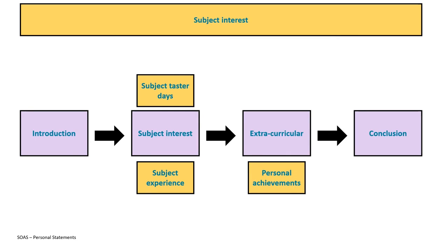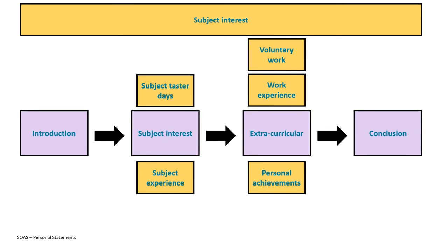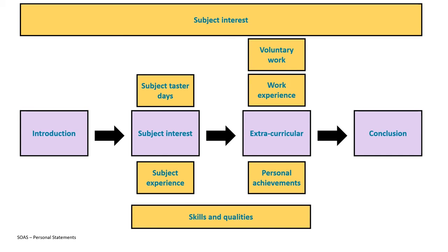Thinking about the extracurricular section, there are a number of things you could include. One might be personal achievements — but consider achievements that are relevant to academia and the overall skills and suitability you're bringing. You could include work or voluntary work experience and think about the skills and qualities you've built up. Those skills and qualities can also be drawn from the subject side of things, which helps wrap together the whole middle section.